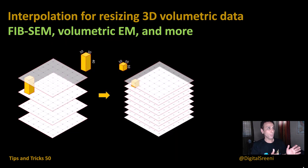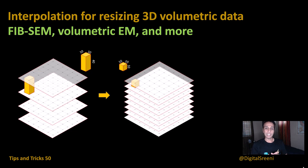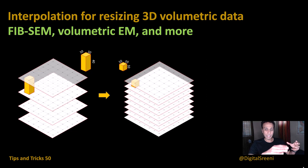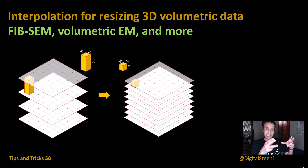Coming back to the topic — this is about interpolation for resizing your 3D volumetric data. What do I mean by that? When you're working on, for example, a FIB-SEM or volumetric EM, or some of the other techniques where you have higher resolution in x and y but lower resolution in z, meaning you're taking your image, slicing your sample, oftentimes you end up with three, four, or five nanometers in x and y.